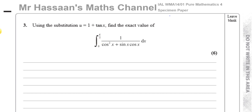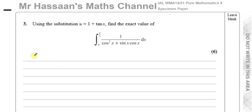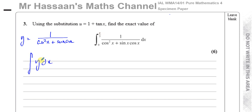Whenever we're doing integration by substitution, I always like to start off in this particular manner. Our objective is: first, let y be the actual function being integrated — so y is 1 over (cos²x + sin x · cos x). We're going to integrate y with respect to x. What I'm going to do is write y · (dx/du) · du, and the dx and du cancel out, giving us the integral of y with respect to x — so both expressions are identical.